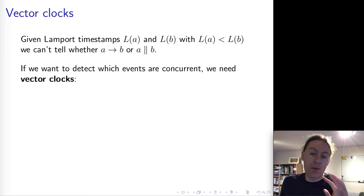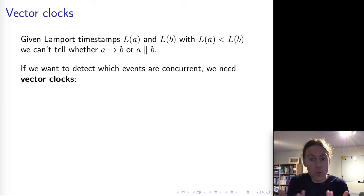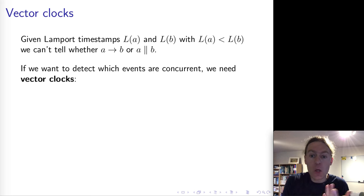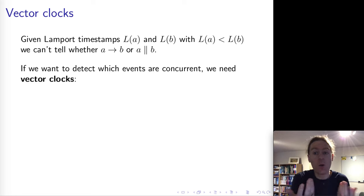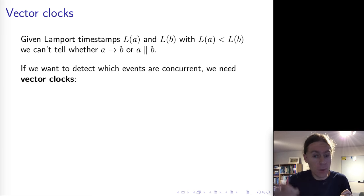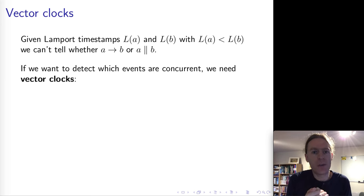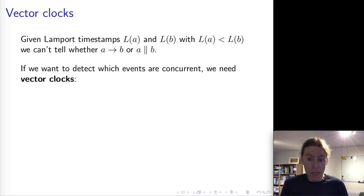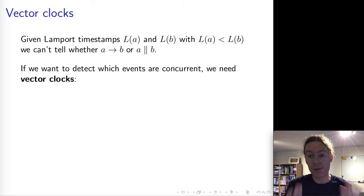But Lamport clocks are not perfect. One limitation is that if you're given two Lamport timestamps L(A) and L(B) where L(A) < L(B), you can't actually tell whether A happened before B or if A and B are concurrent. We can tell that B did not happen before A, but we can't distinguish between two concurrent events and two events where one happened before the other. So it might be useful to have a scheme where we can tell this difference.